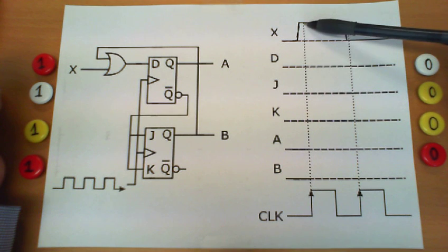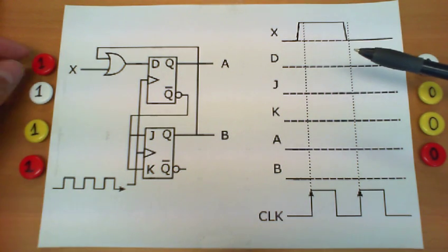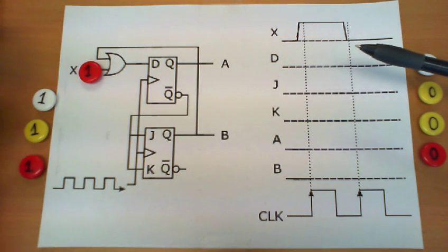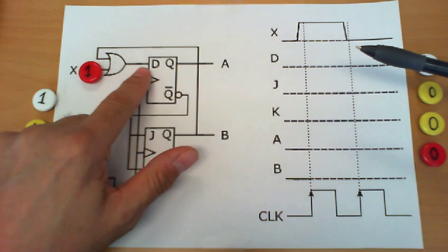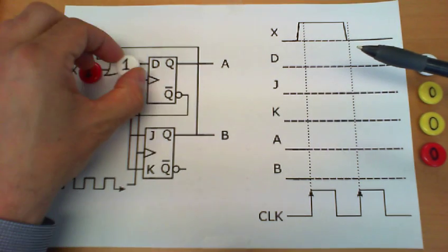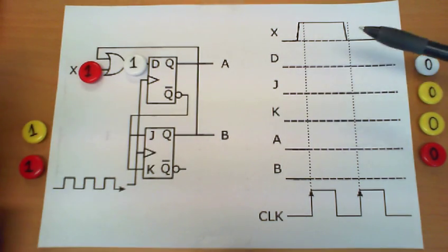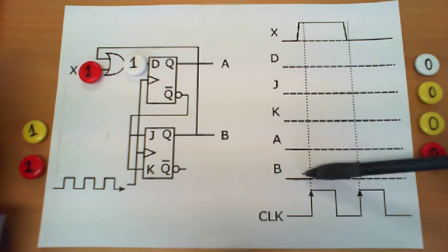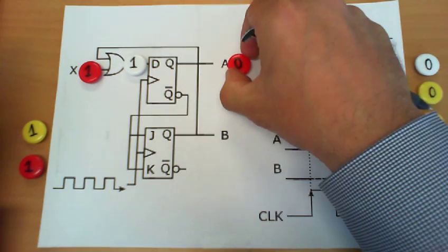So at this instance before the edge of the clock we know that X has the value 1. If X has the value 1 it is enough for us to deduce that D has also the value 1. We also know that A and B as given here have initially value 0.